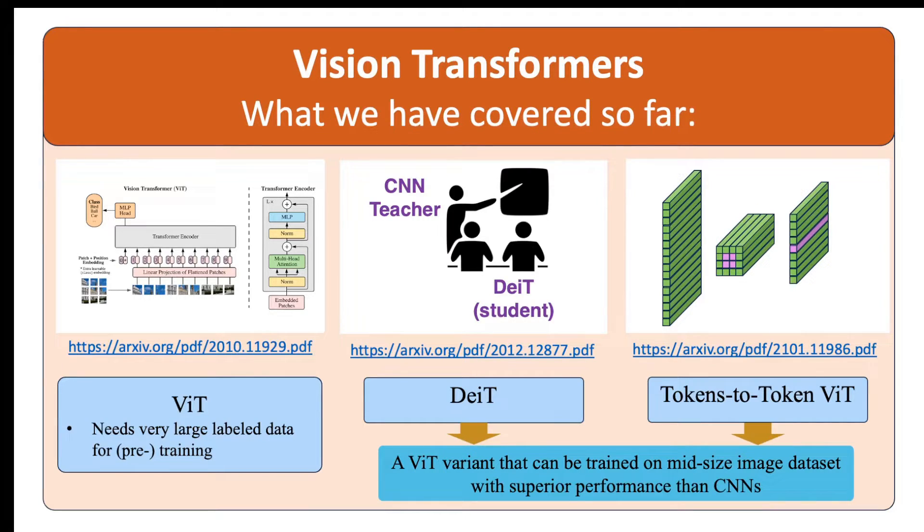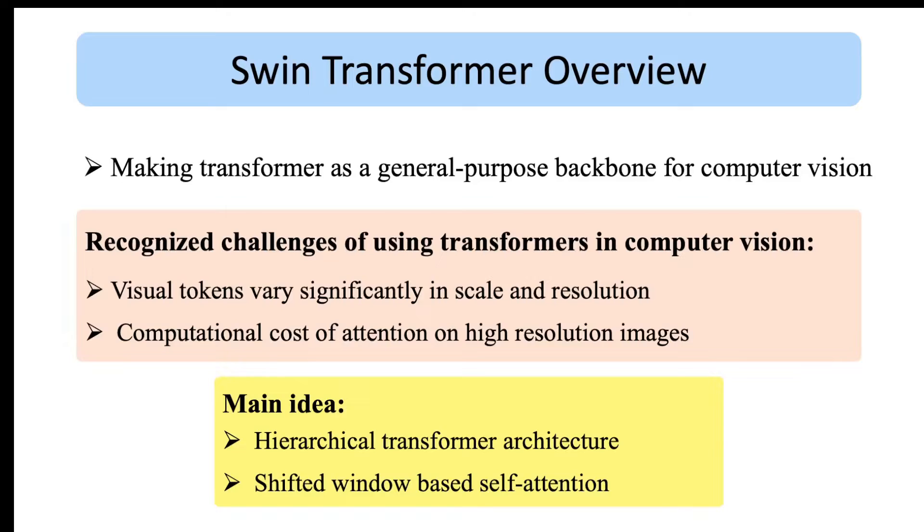In this video we cover Swin Transformer which tries to build a general purpose backbone for computer vision. This paper recognizes the challenges for using transformers in computer vision. The first challenge is that visual tokens vary significantly in scale, which means that when you scale an image the visual tokens usually change a lot. Therefore it is necessary to build multi-scale representations. The second challenge is related to the computational complexity of attention mechanism, especially for high resolution images.